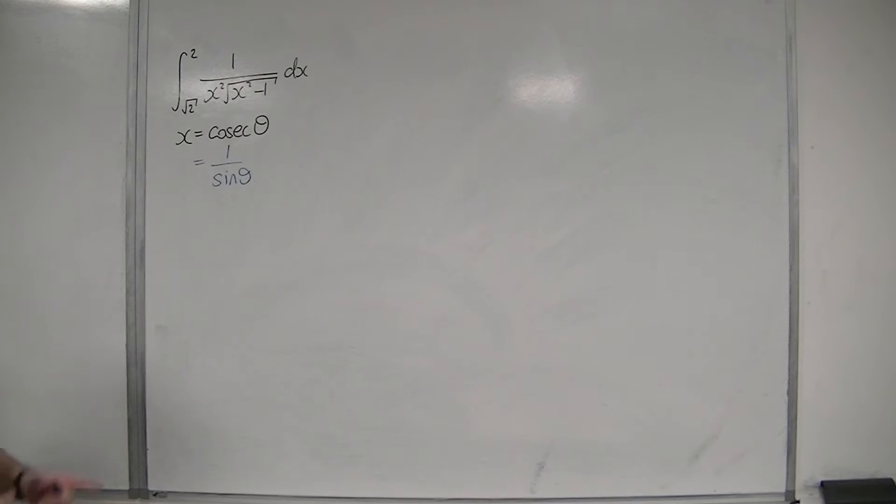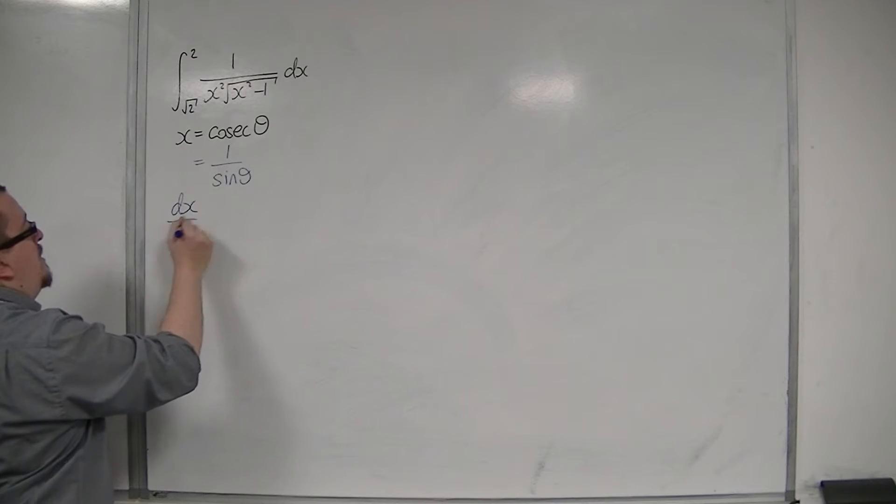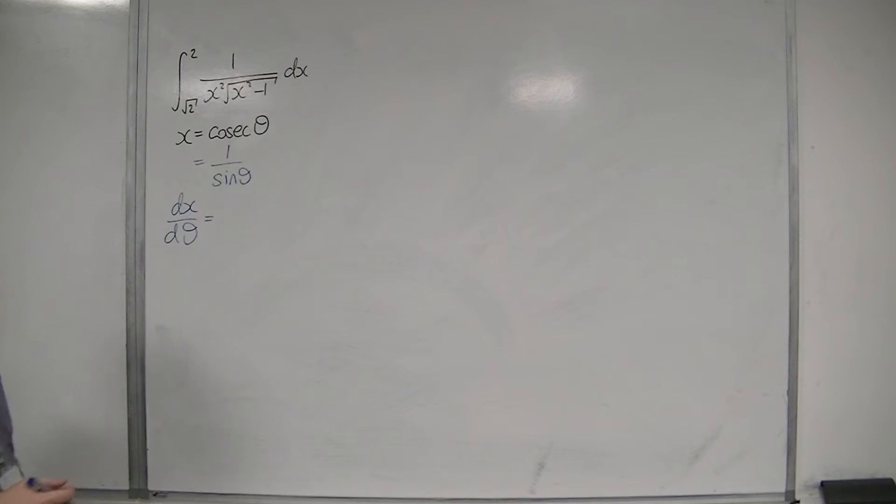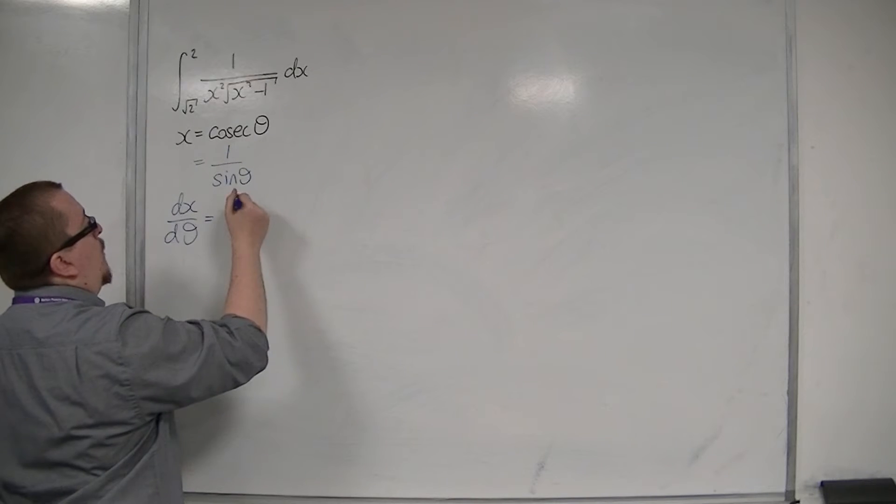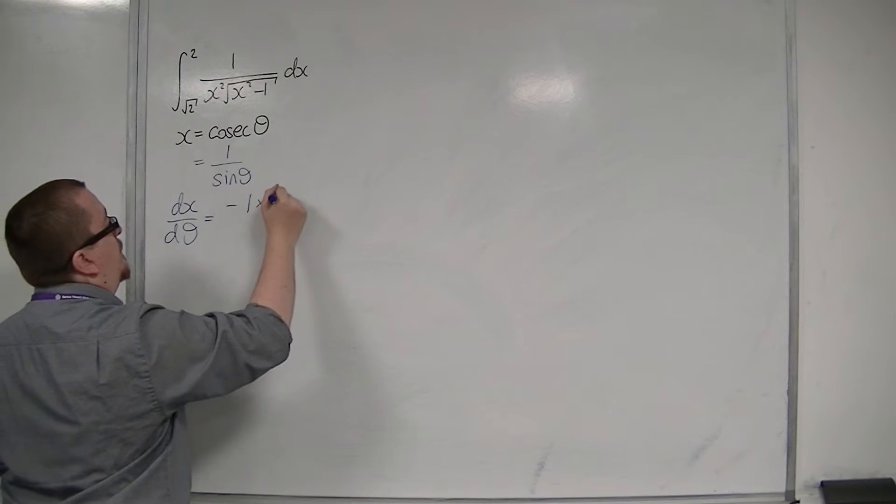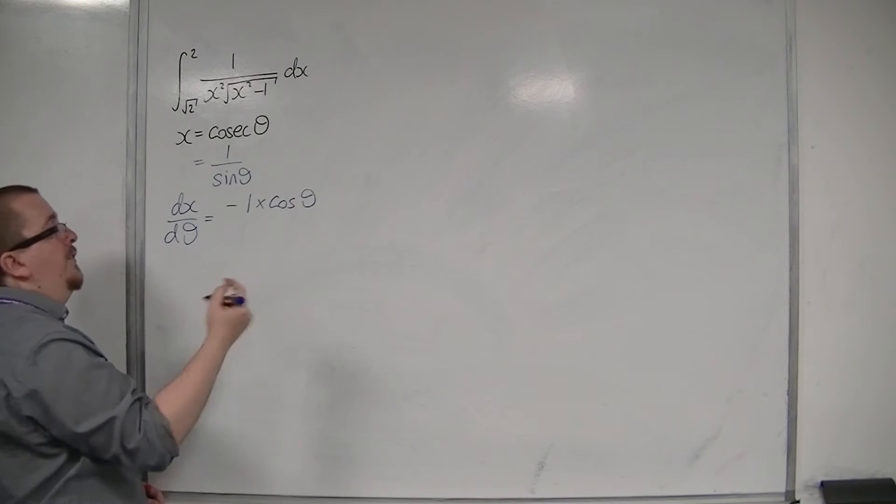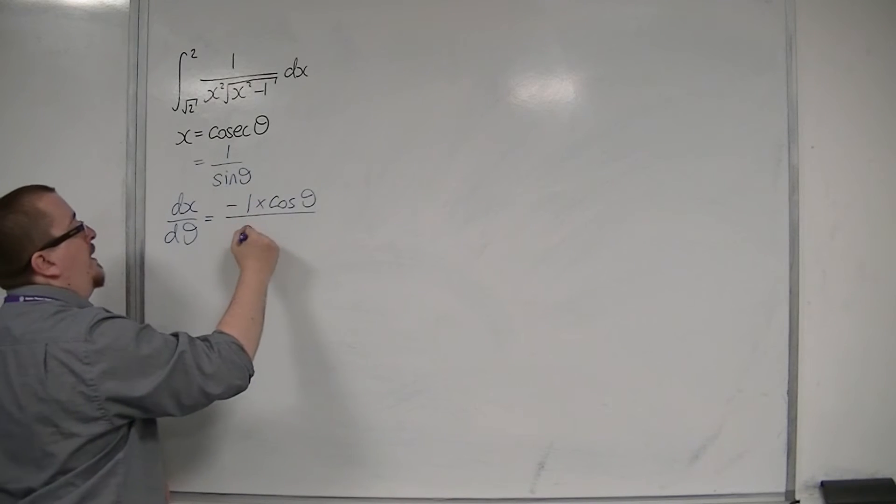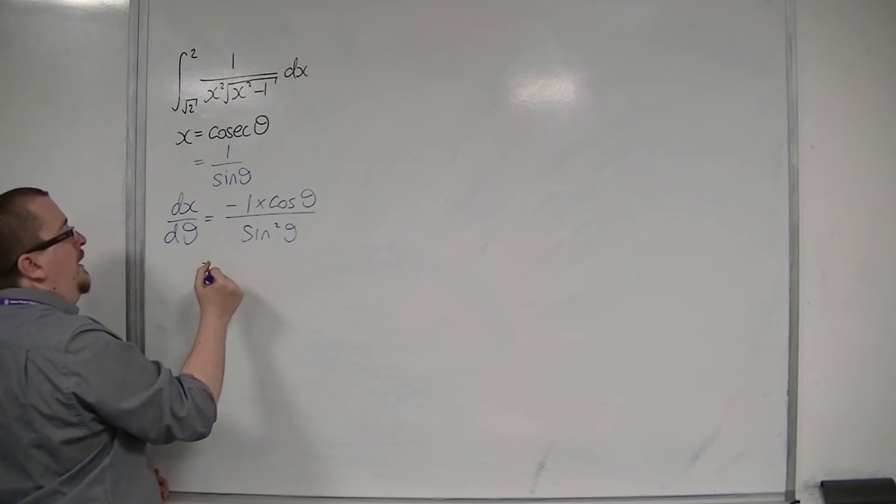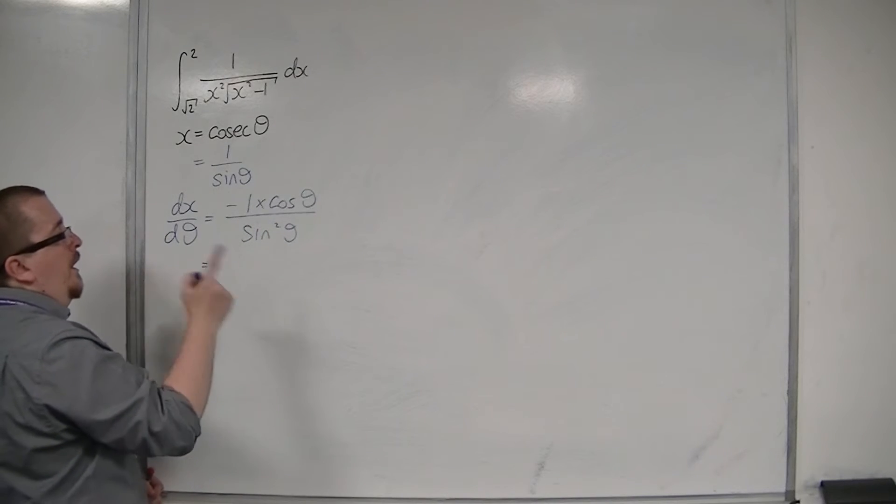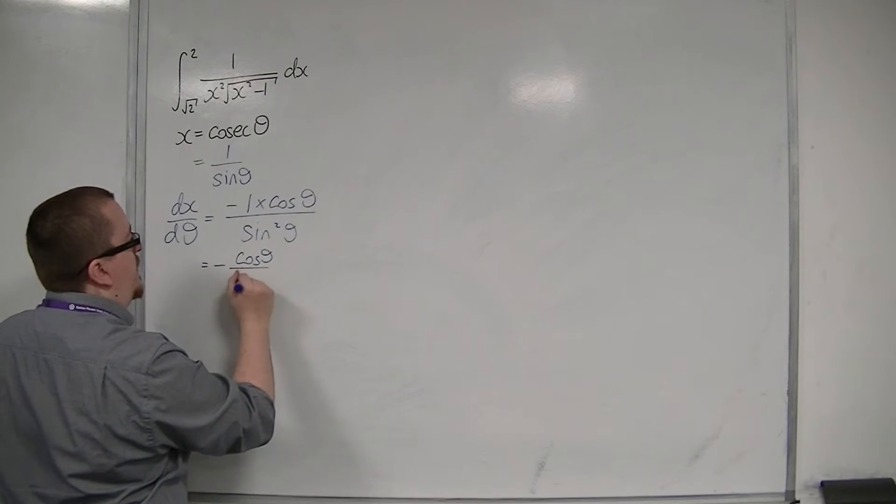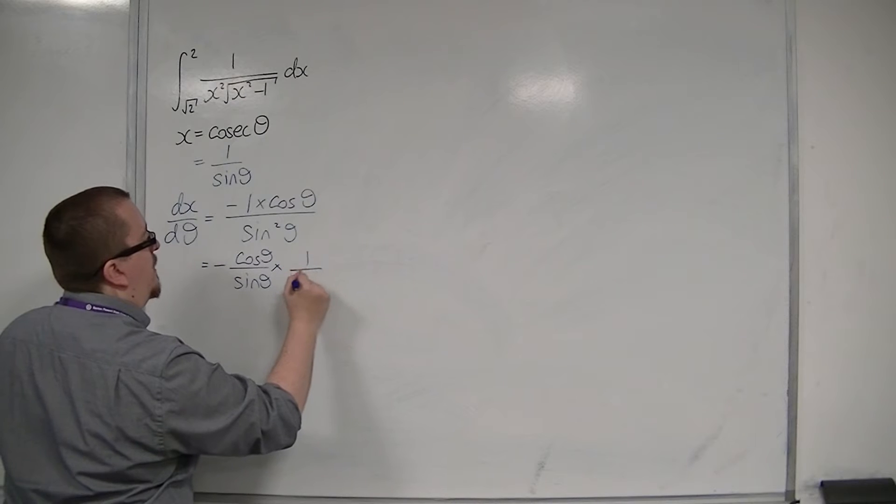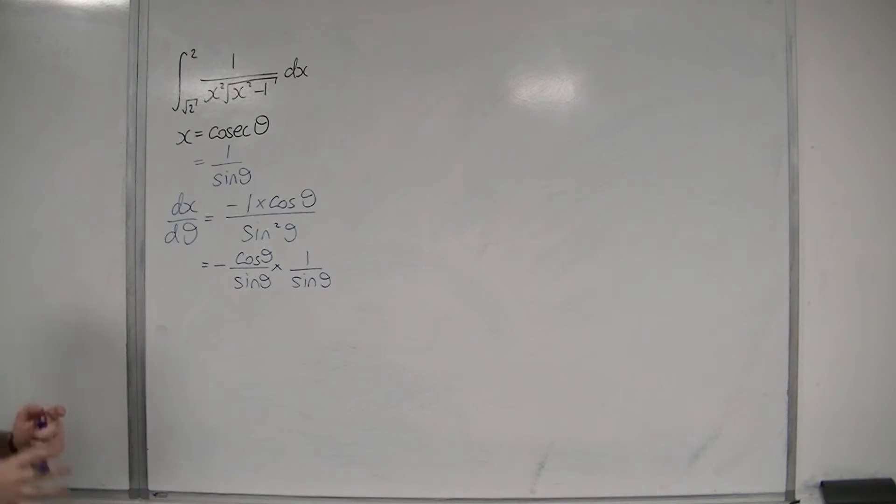Now, the stage that we must always go through is find dx by d theta, differentiate the substitution. So in order to do that, I'm going to have to use the quotient rule. The bottom times the derivative of the top is just 0, take away the top times the derivative of the bottom. So we have minus 1 times cos theta on the top over the bottom squared, so sine squared theta. This is minus cos theta over sine squared, which is minus cos theta over sine theta times 1 over sine theta.